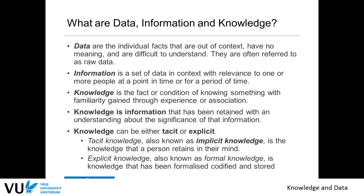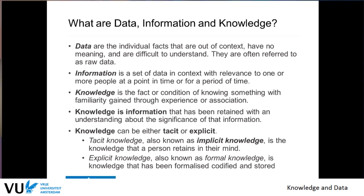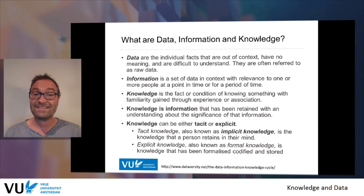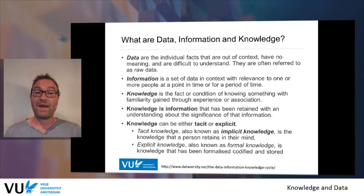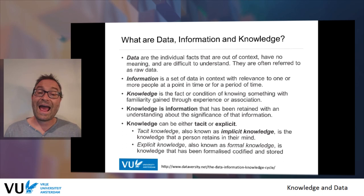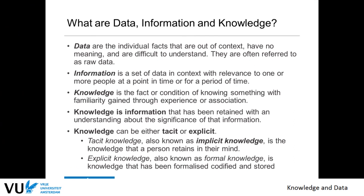Reading out the definition is something you can probably do without me, so let me help you understand what these notions really mean. Data is really the facts on an almost signal level. Information is interpreted data, which is relevant for people so that they can act upon it. And knowledge is the fact that you know something through experience, association, and familiarity — it goes beyond simple information. It is information that has been retained with understanding about the significance of that information.